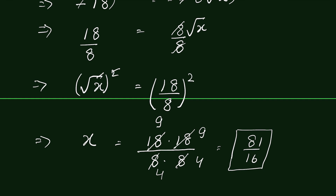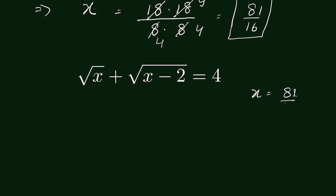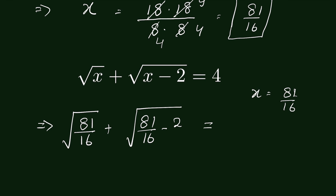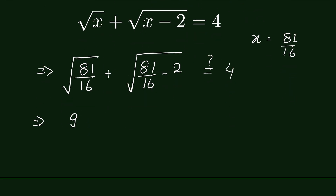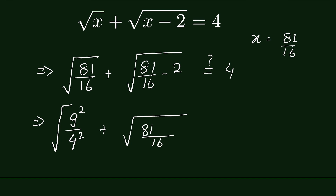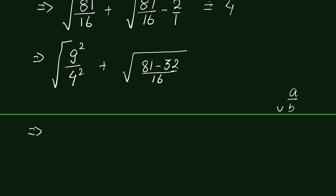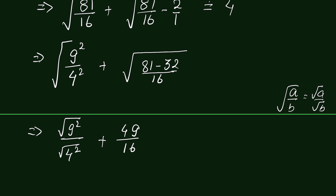Let's verify this answer. We have x equals 81/16. Substituting: square root of (81/16) plus square root of (81/16 minus 2). We check whether this equals 4. Now 81 can be written as 9² and 16 as 4². Taking a common denominator of 16, 81/16 minus 2 becomes (81 minus 32)/16. Since square root of (a/b) equals square root of a upon square root of b, we get 9/4 plus square root of (49/16).